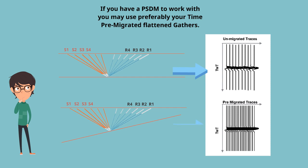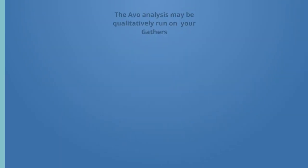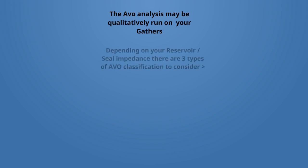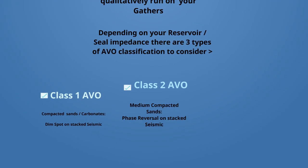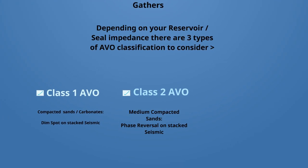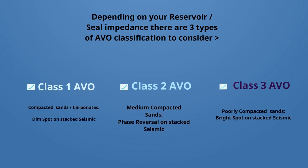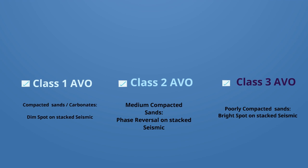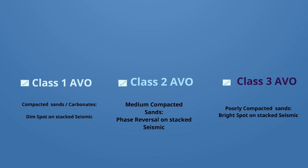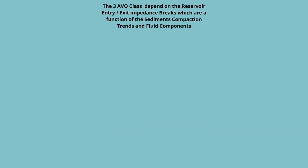Depending on the impedance breaks, there are three main AVO classes after Rutherford and Williams. Class 1 AVO appears as dim spots on stacked images. Class 2 AVO appears as phase reversal. Class 3 AVO shows as bright spots on stacked images. But how do they look in the offset domain?